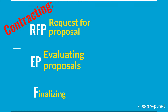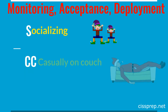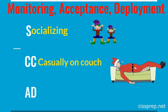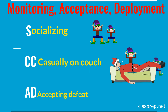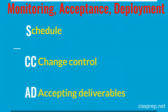For the monitoring, acceptance, and deployment phase, we'll again ask: the PC is mad at us for — and we're going to say it's mad at us for socializing casually on the couch for the double C, and accepting defeat for the AD. The S stands for establishing a contract work schedule. The CC stands for implementing change control procedures. And the AD stands for accepting deliverables, which also implies they would be reviewed in this activity.